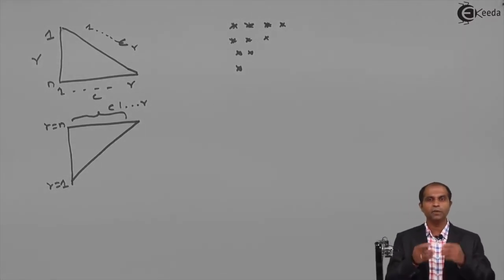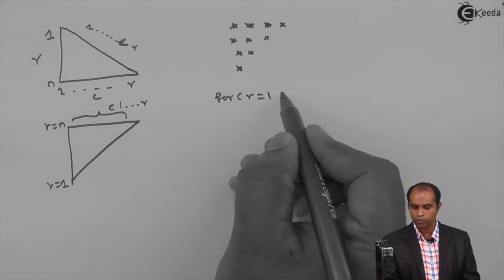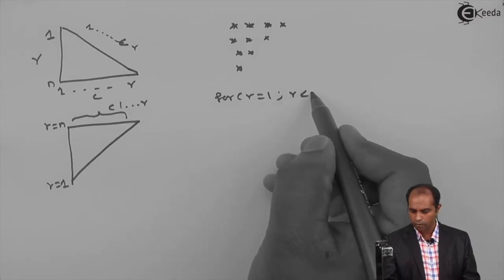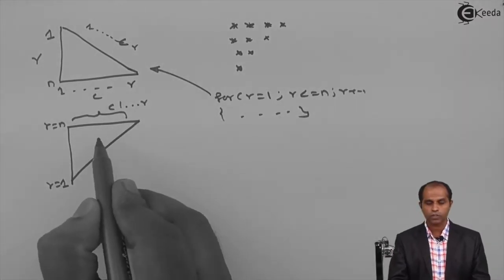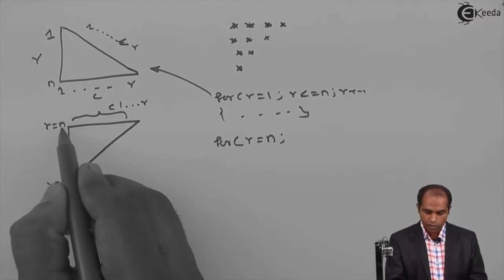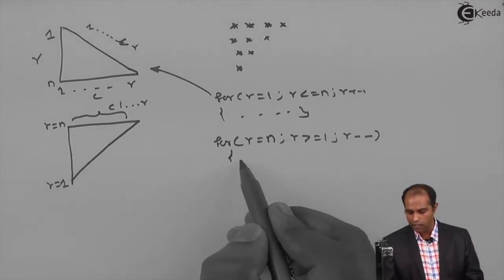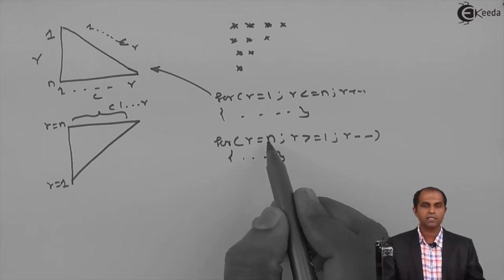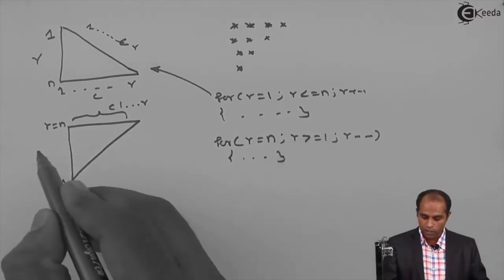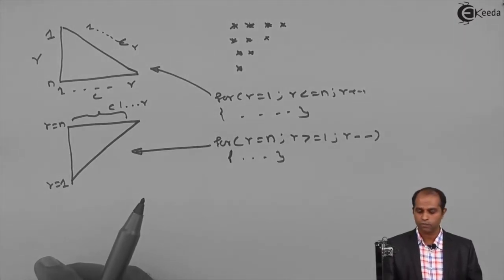Whenever a triangle gets inverted, which loop has to be changed? The C loop remains the same. The only loop that changes is your R loop. Previously R went from 1 to N; now for the inverted pattern, R will go from N to 1. The entire C loop and the print instruction remain as they are.